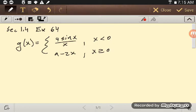The idea here is if I'm not dividing by zero, then 4 sine x over x is fine, and a minus 2x is always fine no matter what a is. So the problem is here at that transition point zero.